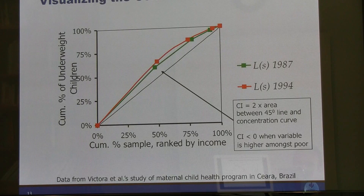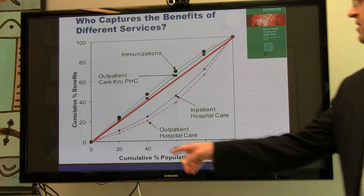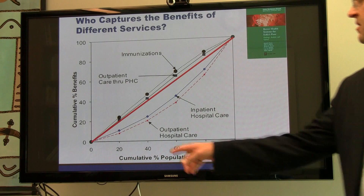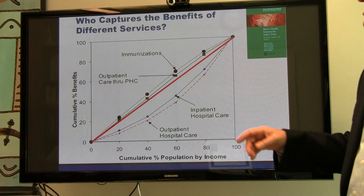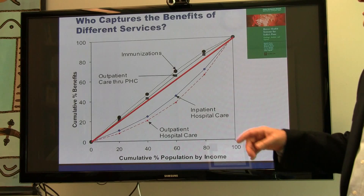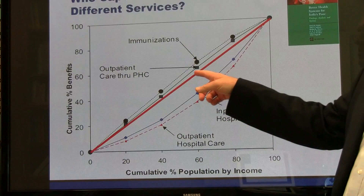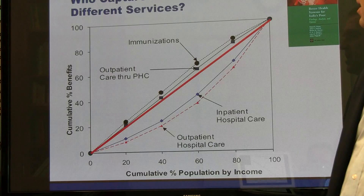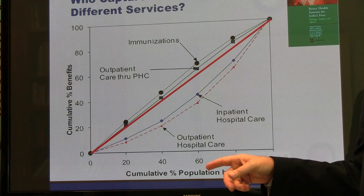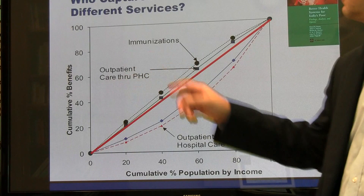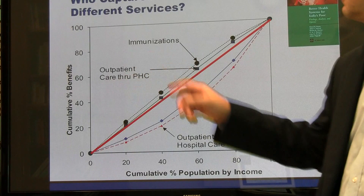Here's some work that the team did in India, looking nationally at different types of services. The red line is the equality line. For services — a good thing as opposed to underweight or mortality — immunizations and outpatient primary health care tended to be concentrated among the poor, meaning the poor actually received more of these services. But inpatient hospital care and outpatient hospital care had positive concentration indexes, meaning the rich were getting more of these services.